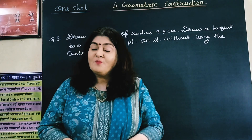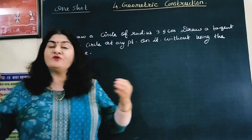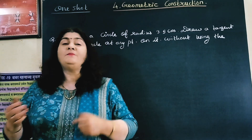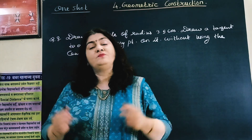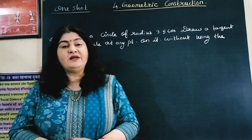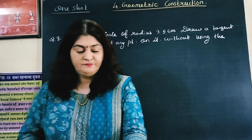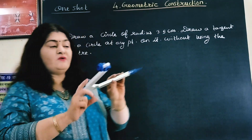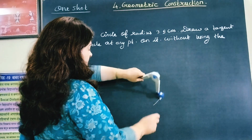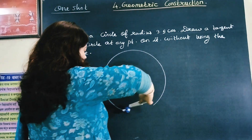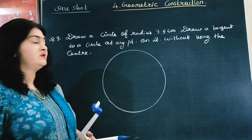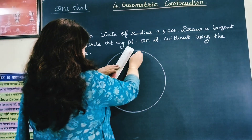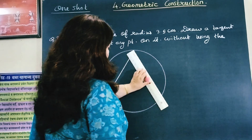Now we are on the third sum of geometric construction. We have to draw a circle whose radius is 3.6 cm, and we have to draw a tangent to any point of the circle without using the center. First of all, let us draw a circle with radius 3.6 cm. I have taken 3.6 cm radius and drawn a circle. There is no need to mark the center because we are not going to use it. Now draw a triangle inscribed in the circle.